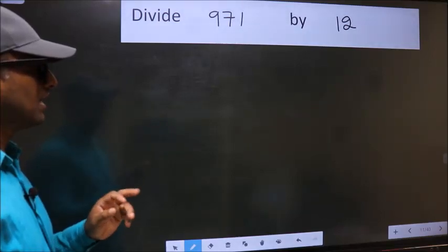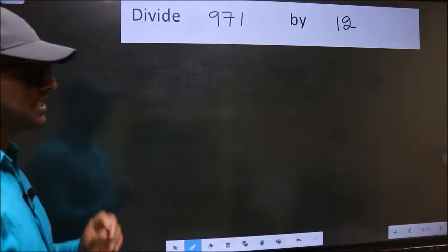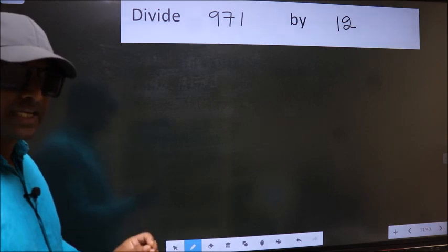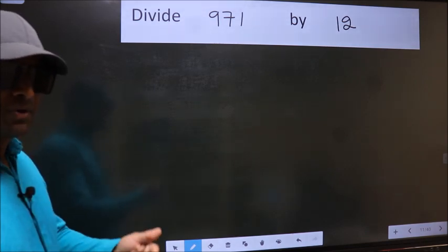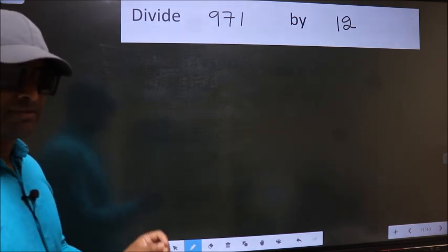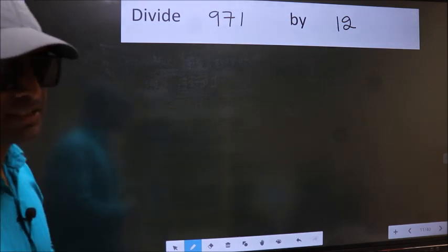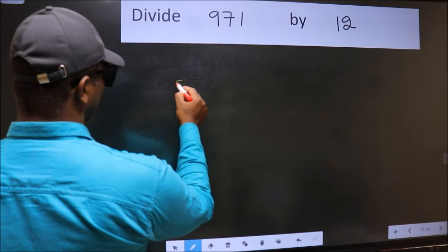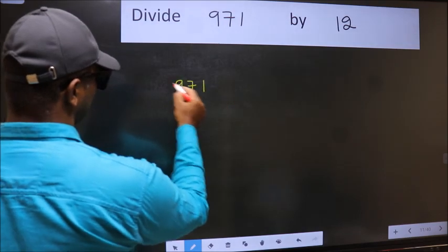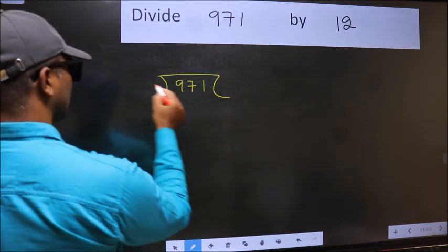Divide 971 by 12. While doing this division, many make this mistake. What is the mistake that they make? I will let you know. But before that, we should frame it in this way: 971 and 12 here.